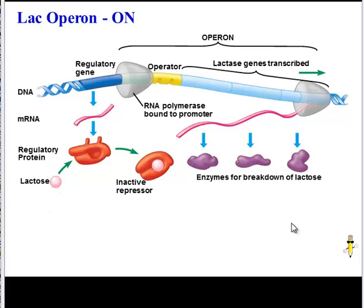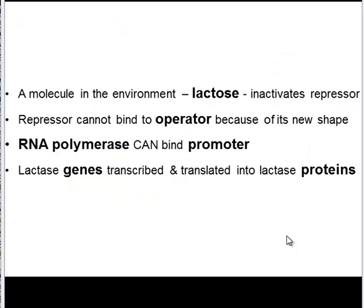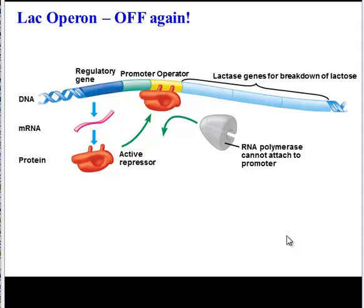Here's the really cool thing, though. After these enzymes have broken down all the lactose, the operon gets turned off again. Without lactose in the environment, there's nothing to bind the repressor, so the repressor becomes active again and binds the operator. RNA polymerase is blocked from the promoter, and transcription and translation of lactase genes stops. This is a great way to maintain homeostasis, because if the lactose is all gone, why waste time and energy transcribing and translating lactase enzymes?